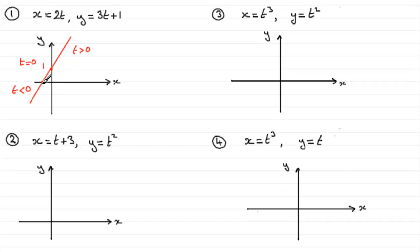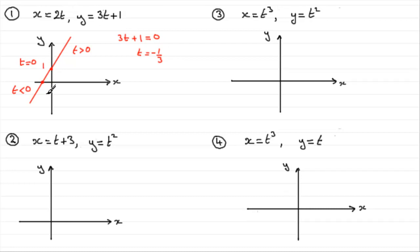You might also be asked to find out where the curve crosses the x-axis. At that point we know that y is zero, so when y is zero, 3t plus 1 equals zero. Taking 1 from both sides and dividing by 3, t equals minus a third. Putting minus a third back in for x, x equals 2 times minus a third, which is minus 2 thirds. So this point is (−2/3, 0) and it occurs when t is minus a third.